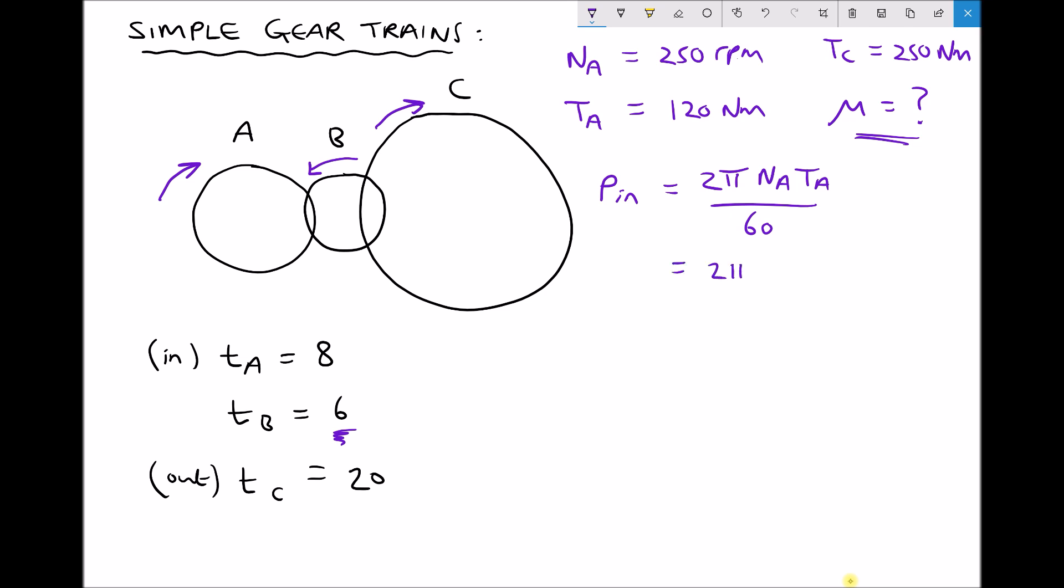We have 2π times N_A which is 250 times T_A which is 120 over 60, giving us an input power equal to 3142 watts or we'll call that 3.14 kilowatts.